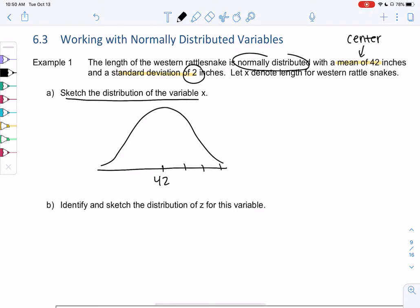And then we count by 2s three times for a standard deviation of 2. So 1, 2, 3. So that'll be 44, 46, 48. And then we'll subtract 40, 38, and 36. And this is x for length of rattlesnakes. We always do 3 because of that 99.7% was within three standard deviations.